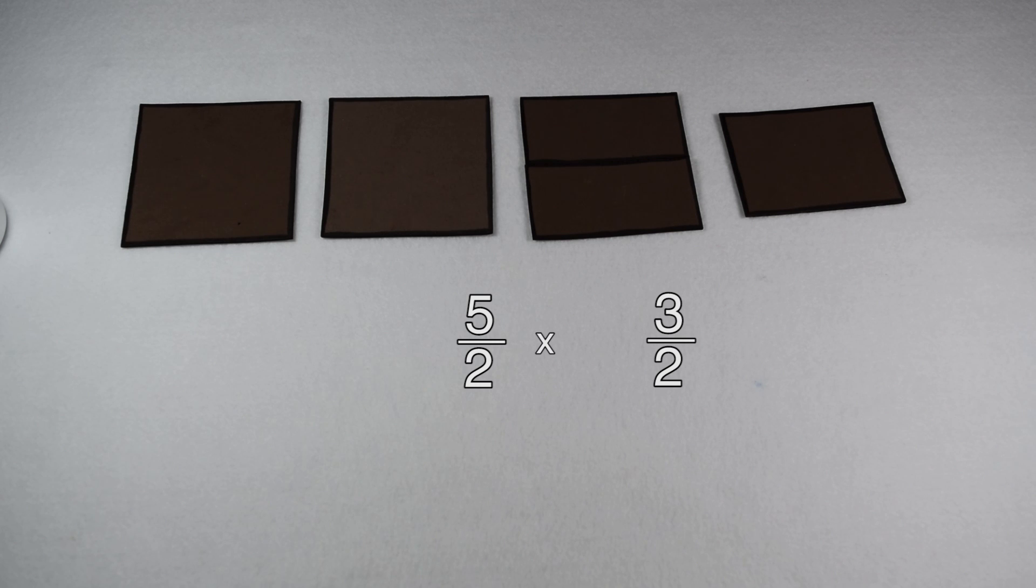Now I can multiply my five halves times three halves. Five times three gives me fifteen. Two times two gives me four, so we have fifteen-fourths. Fifteen-fourths is an improper fraction that we can change to a mixed number by dividing our numerator by our denominator. Four goes into fifteen three times, and my remainder of three becomes my new numerator. So in lowest terms we have three and three-fourths pounds.